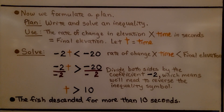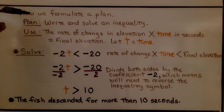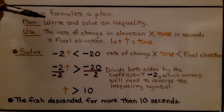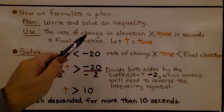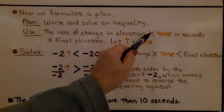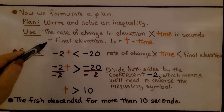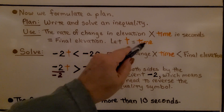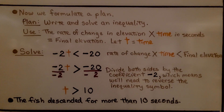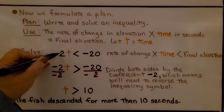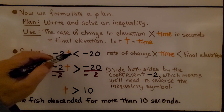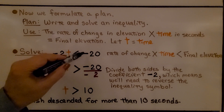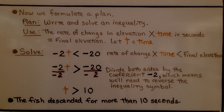Now we formulate a plan: write and solve an inequality. We'll use the rate of change in elevation multiplied by the time in seconds, which equals the final elevation. We let t be our variable for time. So we write: negative 2 times t is less than negative 20. That's the rate of change multiplied by the time is less than the final elevation.